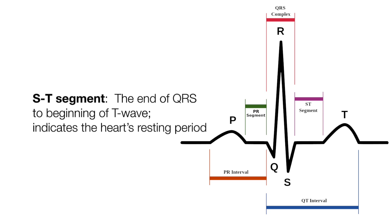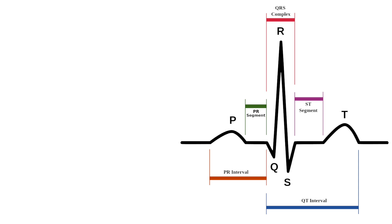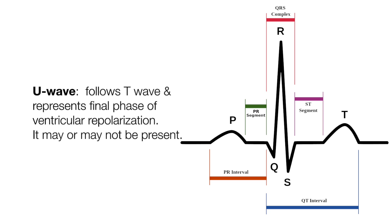The ST segment is the end of the QRS to the beginning of the T wave, and indicates the heart's resting period. The T wave indicates ventricular repolarization — the ventricles return to their resting state. In the QT interval, from the beginning of the Q wave to the end of the T wave, it indicates the total time for ventricular depolarization and repolarization. The U wave follows the T wave and represents the final phase of ventricular repolarization, and it may or may not be present.